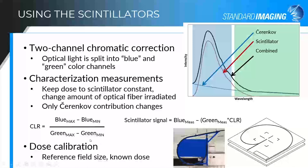If you'd like to apply a dose calibration to your device, you give it a known dose in your reference field size, and that becomes essentially a unit conversion — a constant multiplied by the corrected signal to give output in terms of dose.